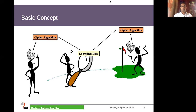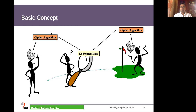In cryptography we use specific terms. Any information that a human can read is called plain text. We transform this information into data which nobody will be able to understand — that is called cipher text. The process which converts plain text into cipher text is called encryption. The mathematical algorithm used to do so is called a cipher or encryption algorithm. The cipher text can also be converted back to human-readable plain text — that process is called decryption.